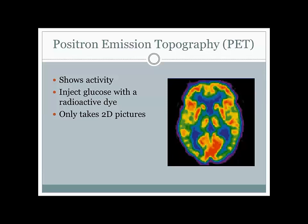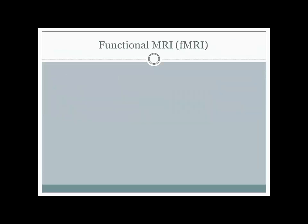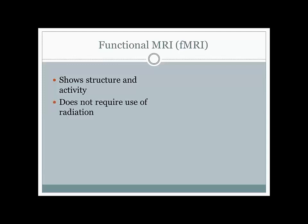To deal with this problem, we developed functional MRIs, or functional magnetic resonance imaging. The advantage is you can see both the structure and the activity—it takes the structural resolution of the MRI and also contains information about activity. Because MRIs are done in a magnetic field, this does not require the use of radiation, so we don't have to expose patients to unnecessary radiation. Just as the MRI gave much more resolution than the CAT scan, the fMRI gives much better resolution than the PET scan.